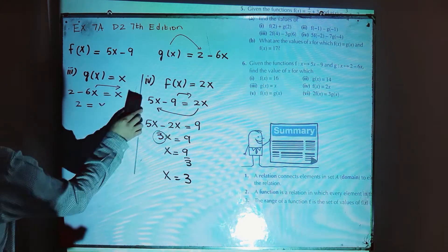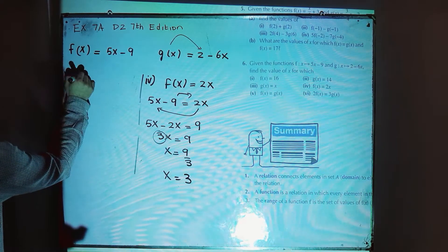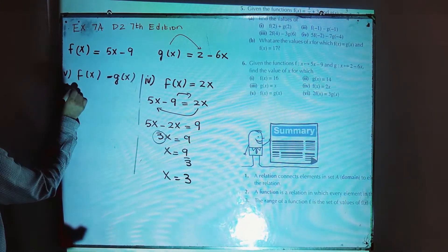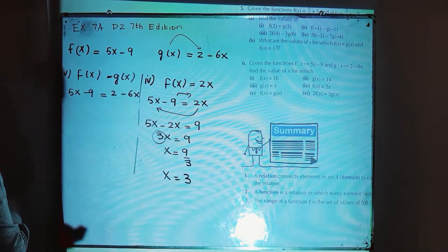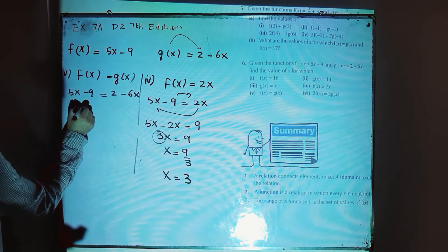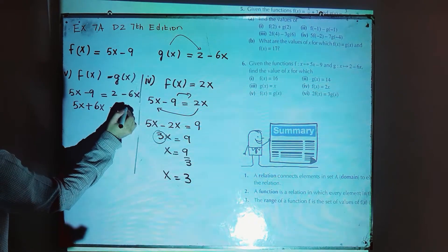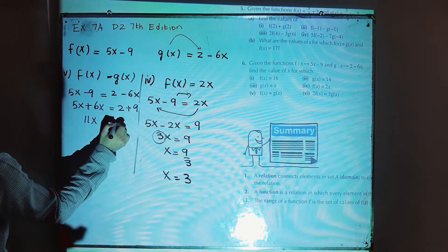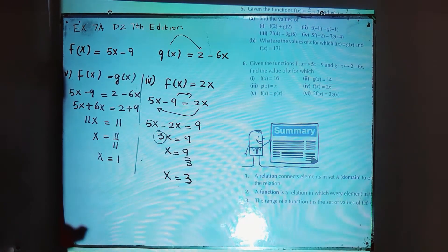Part number 5 is f(x) is equal to g(x). Well, f(x) is equal to 5x minus 9 and g(x) is equal to 2 minus 6x, so you have to equate f(x) and g(x). Move minus 6x to the left side — it will become plus 6x — and that is equal to 2. Move minus 9 to the right side — it will become plus 9. So 5x plus 6x is 11x, equal to 9 plus 2, which is 11. So x is 11 over 11, meaning x is equal to 1. That is the answer for part number 5.